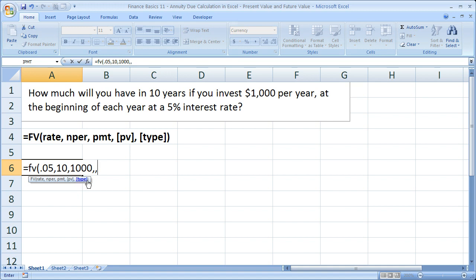So the type argument is bold down there. The reason we don't have anything for present value is because it doesn't say so in the problem. You're just investing $1,000 every year, so you only put something in for the annuity. Now the type is where you tell the function that it's going to be an annuity due.